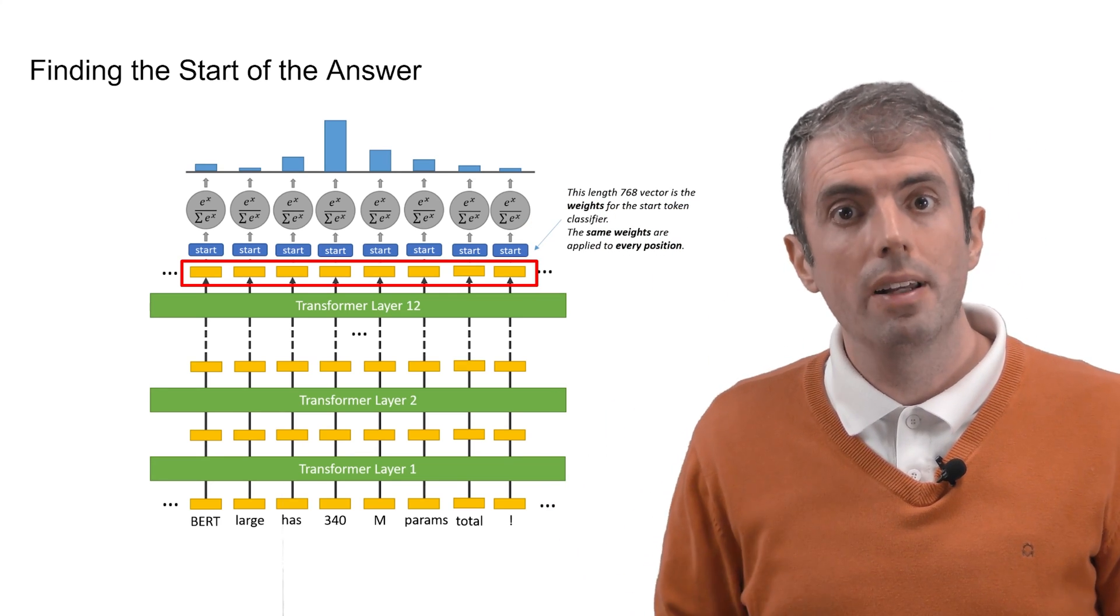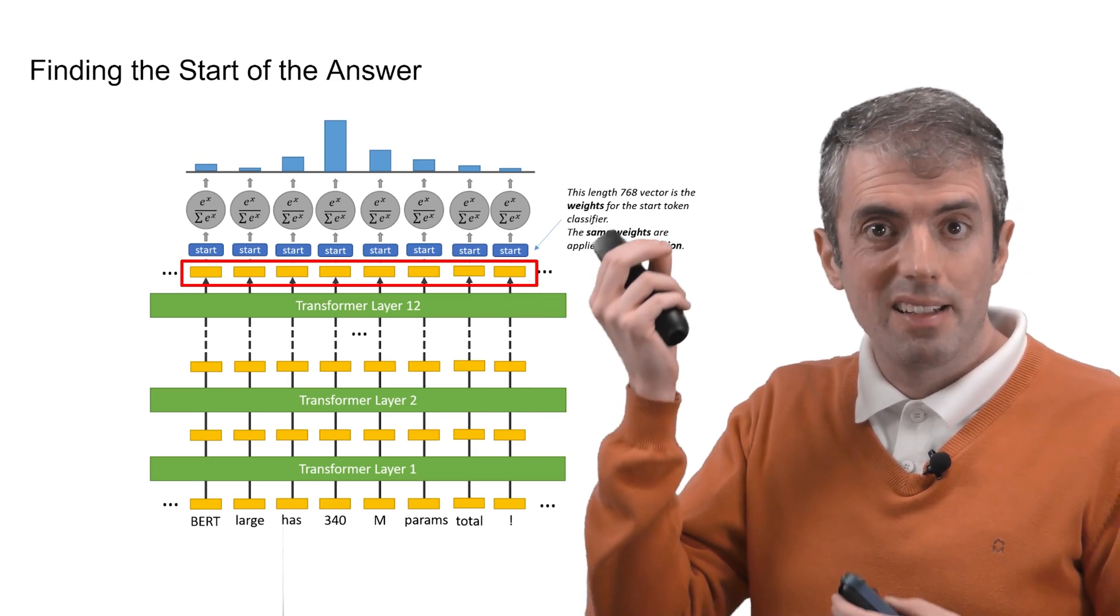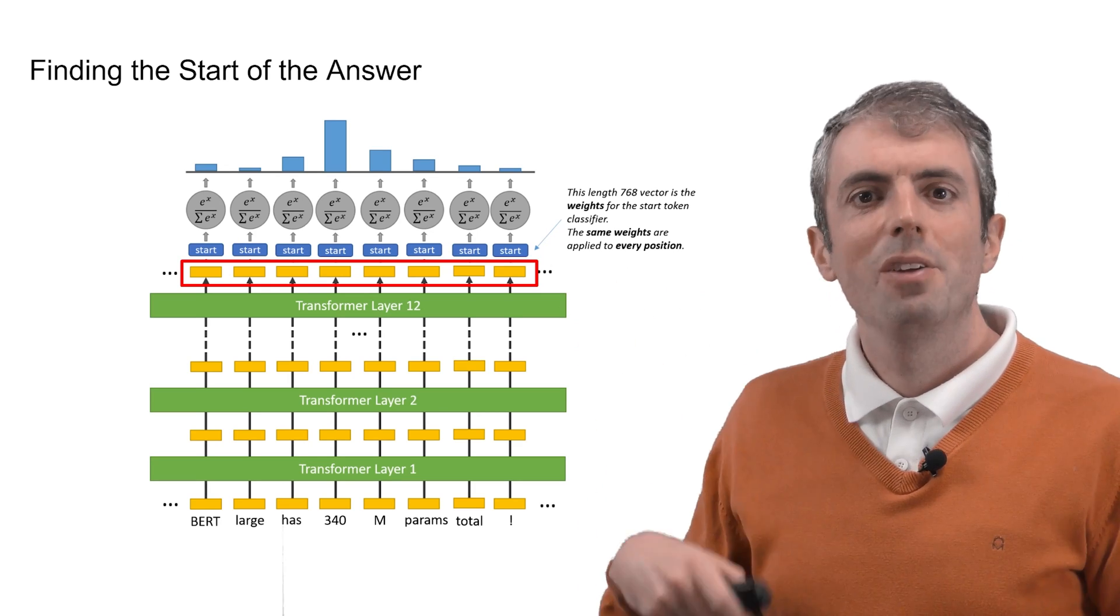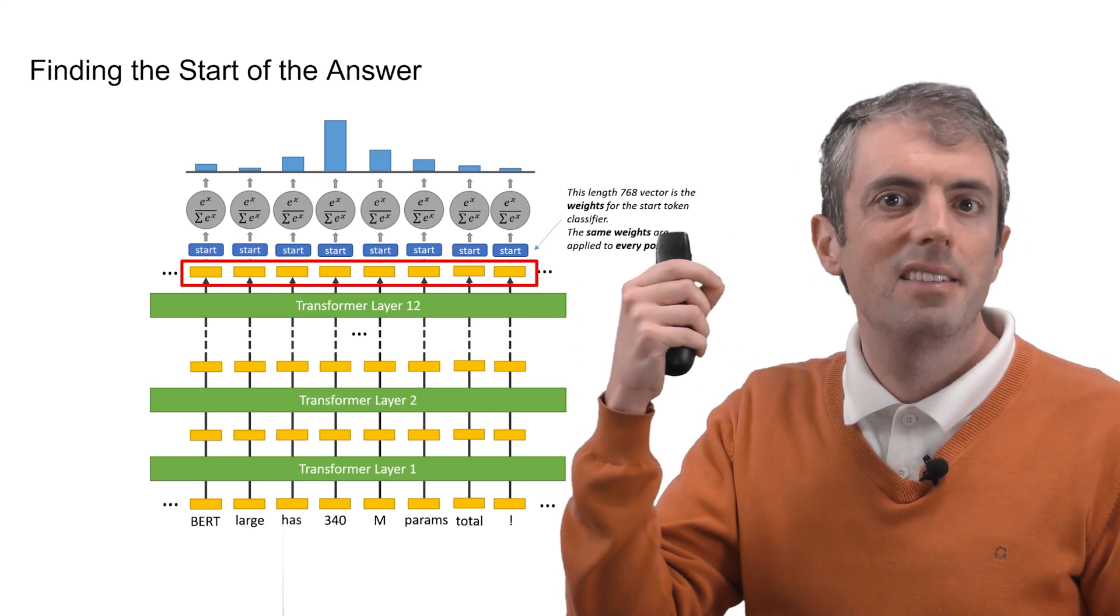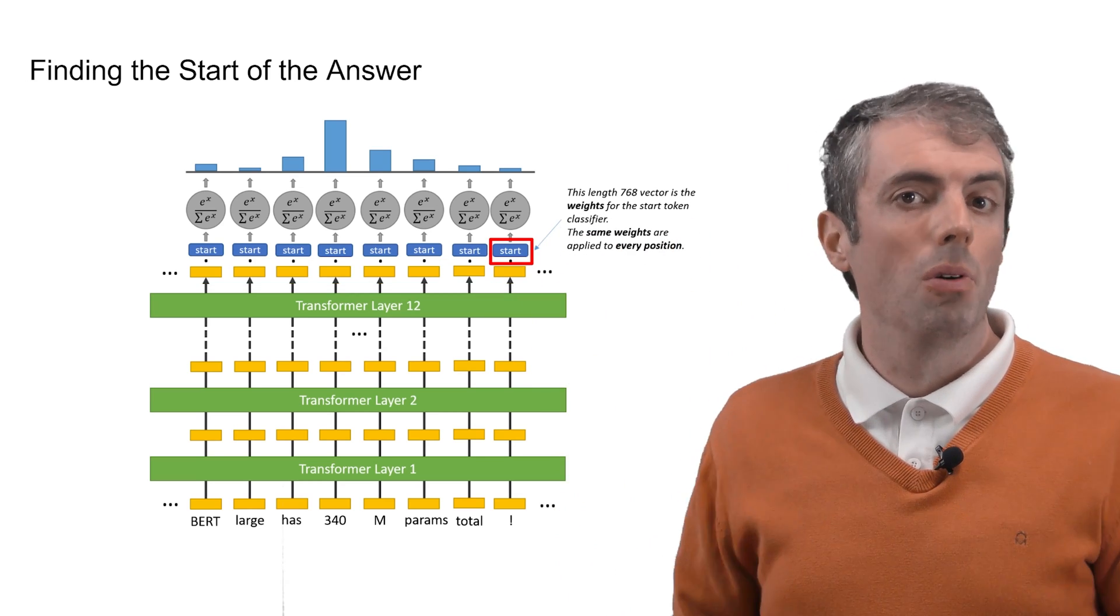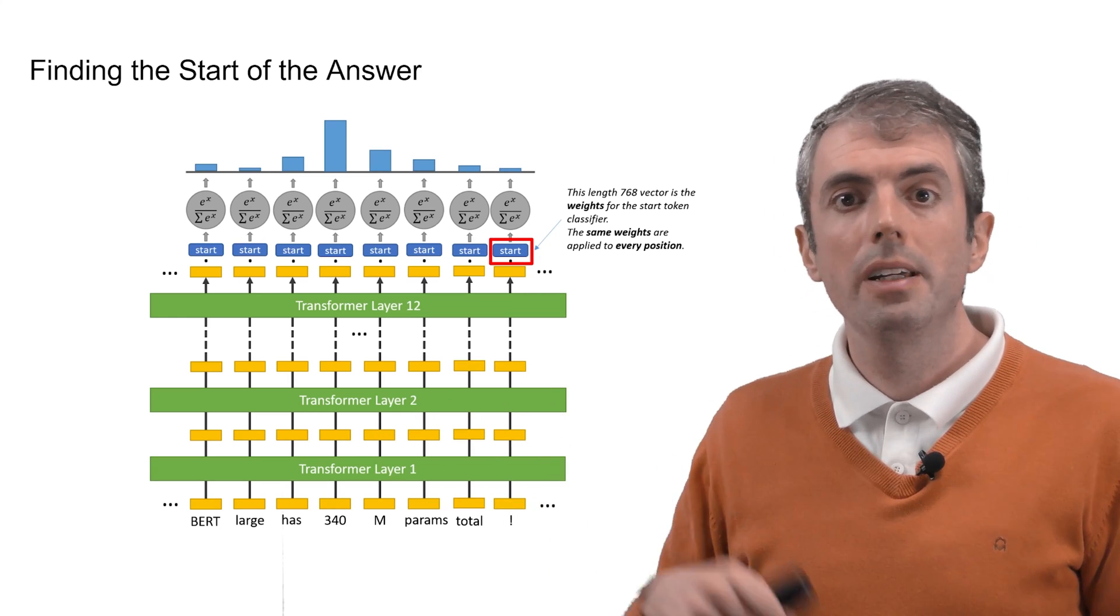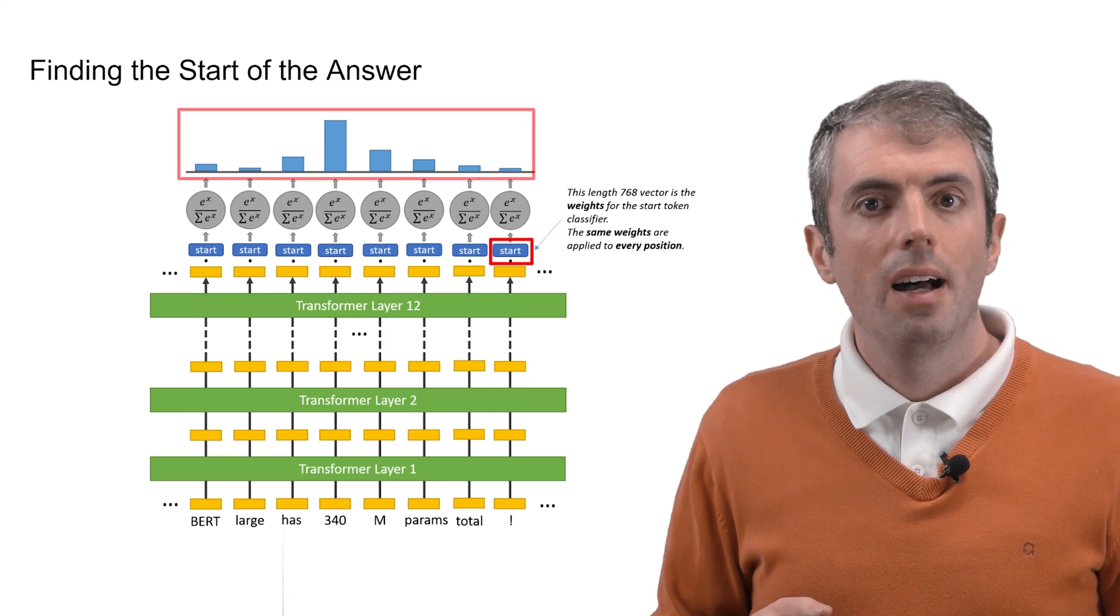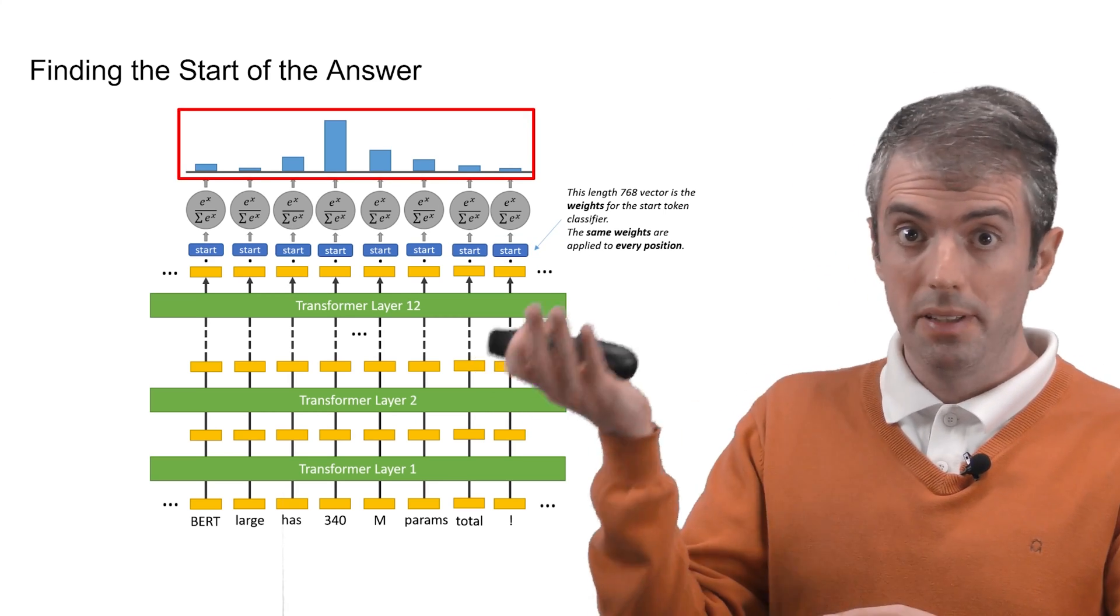You take the dot product of that and a vector of weights that define your classifier for detecting the start position. This gives you a score. Once you take the softmax of all of the scores for each of your tokens, you get a probability distribution of the start of the answer being at each of the positions in the sentence.